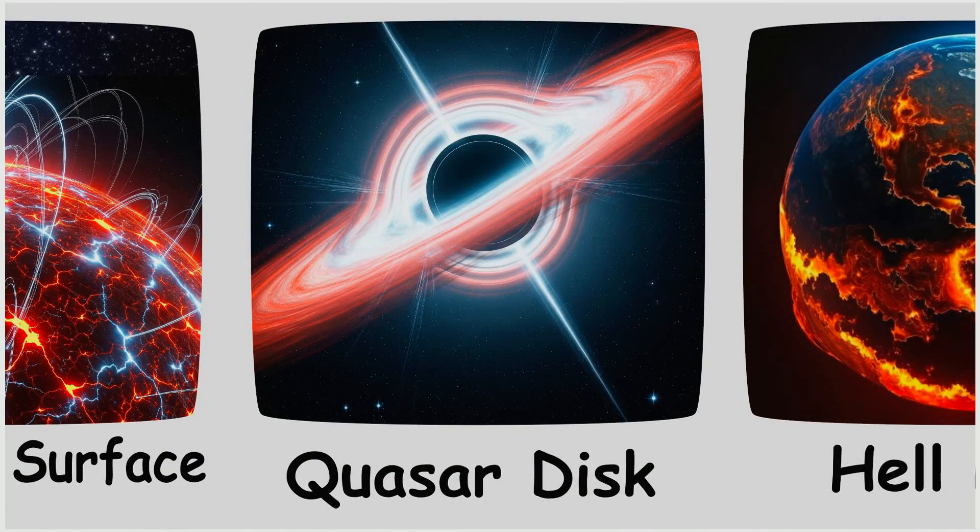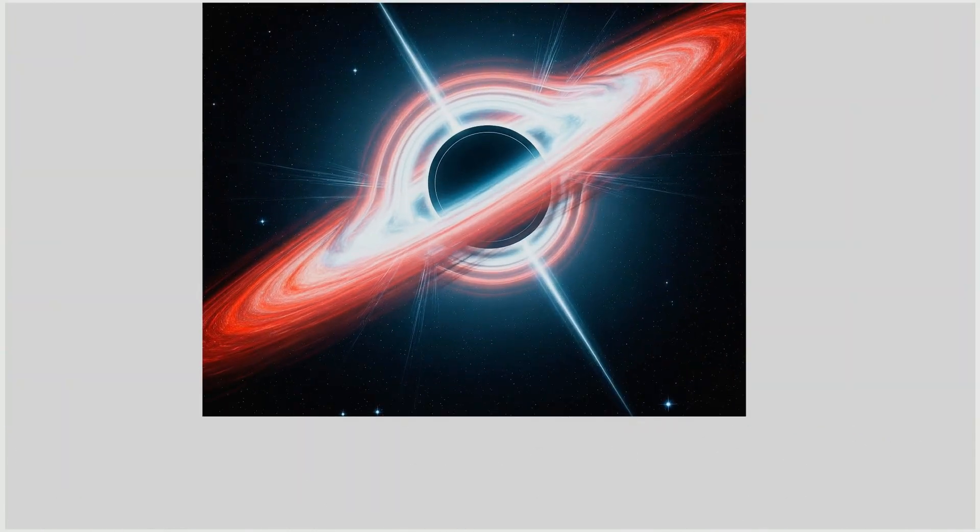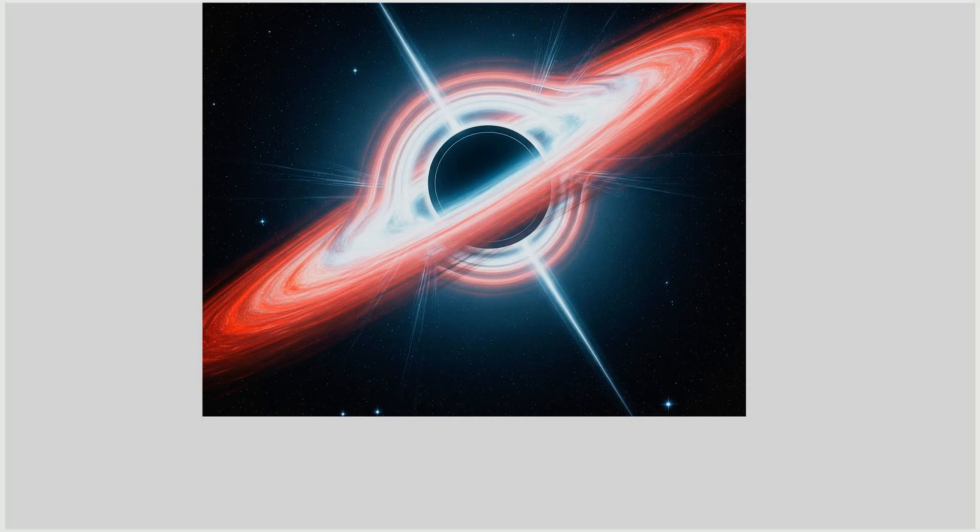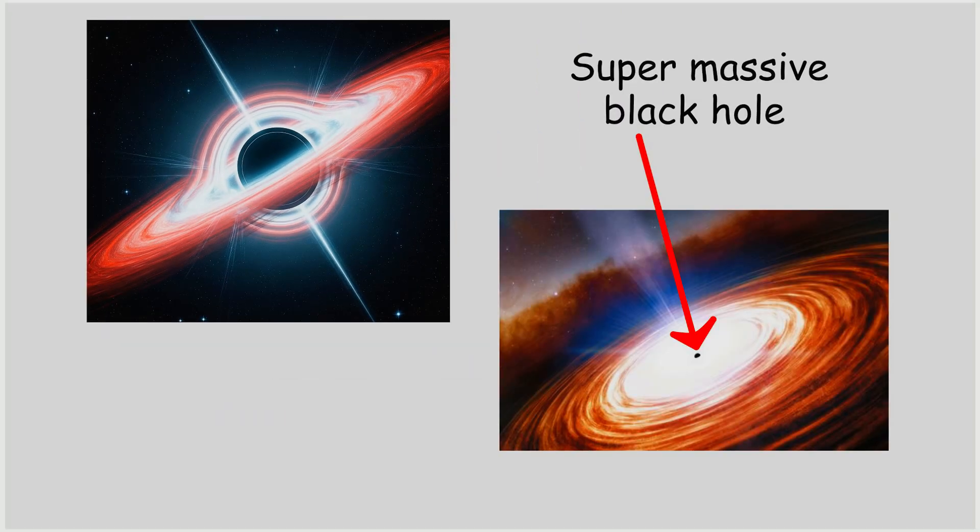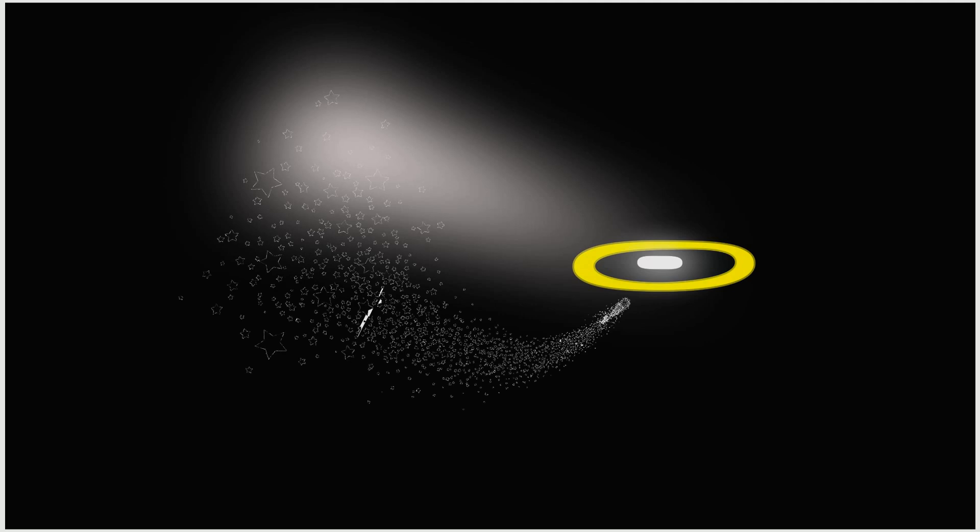A Quasar's Accretion Disk. Quasars are the extremely luminous cores of young galaxies, powered by supermassive black holes feeding on vast amounts of matter. The light from a quasar's accretion disk can outshine entire galaxies, despite being confined to a region smaller than our solar system.